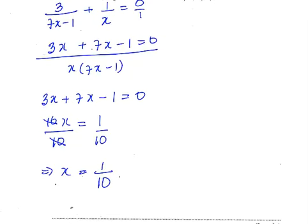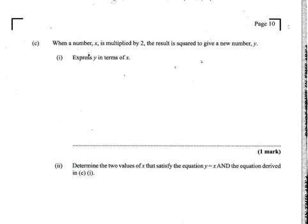Let's go to the C part of the question. Part (c) says: When a number x is multiplied by 2, the result is squared to give a new number y. Part (i) is asking us to express y in terms of x. So in order for us to get y, a number x is multiplied by 2, and the result is squared. So we could say y is equal to 2x squared, or y is equal to 4x squared.